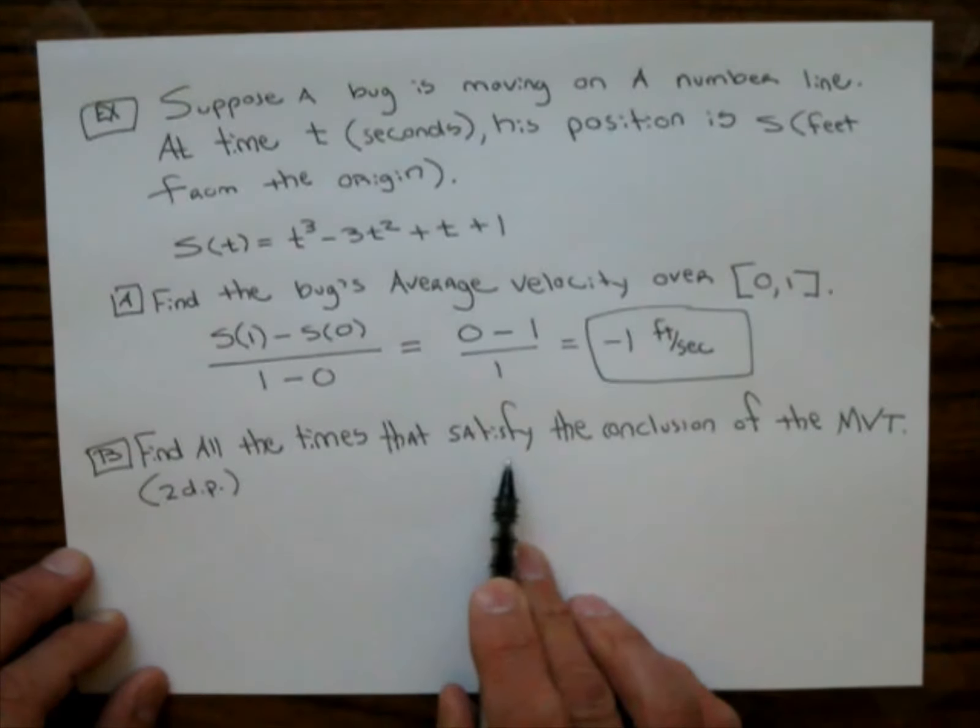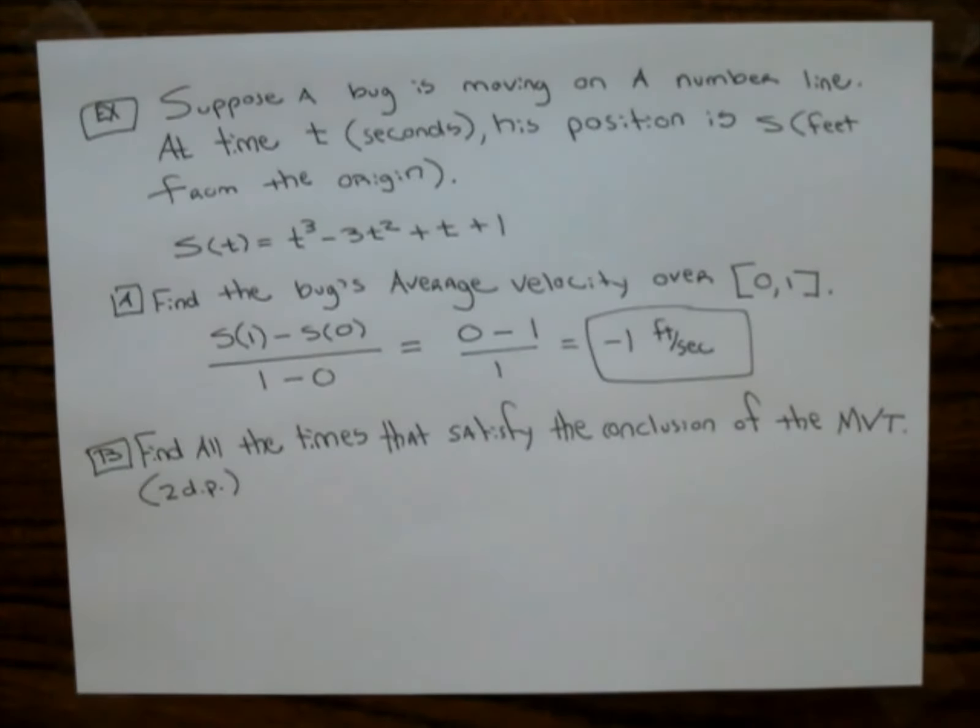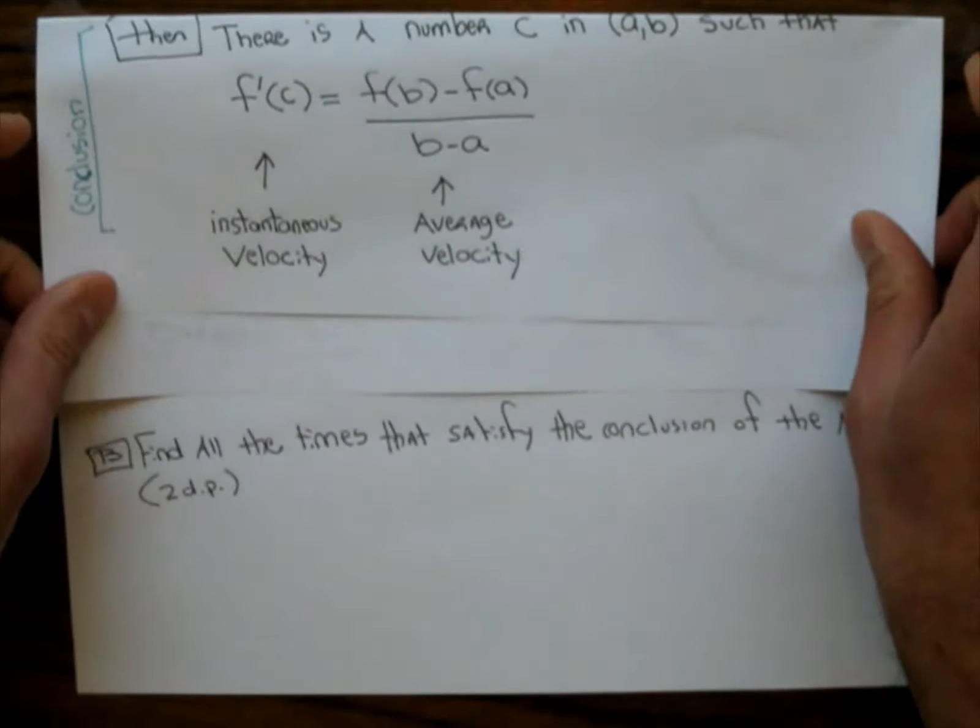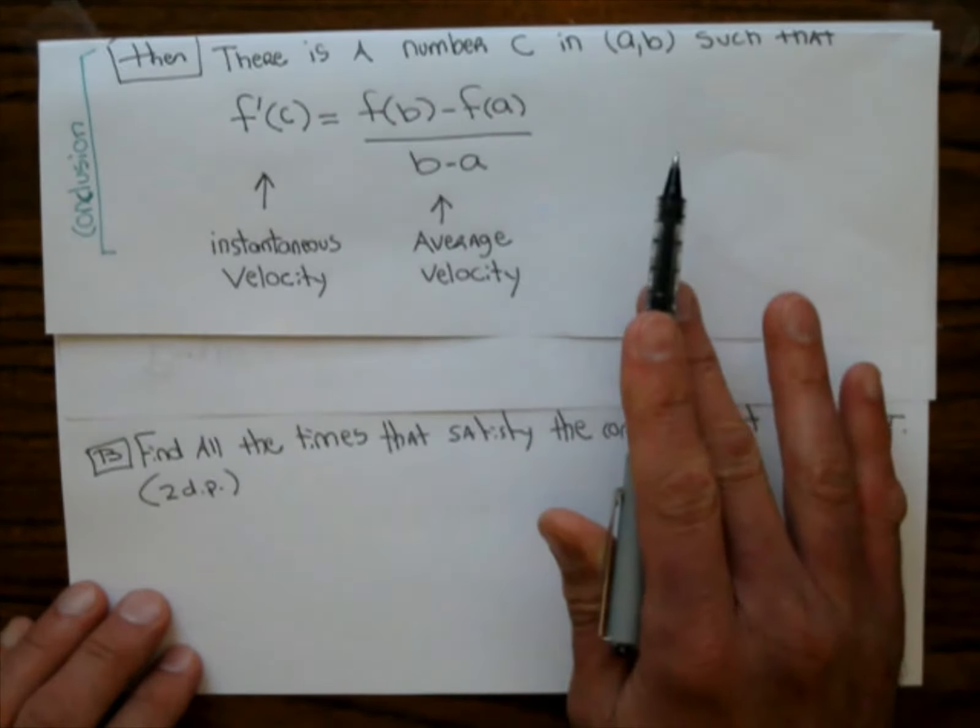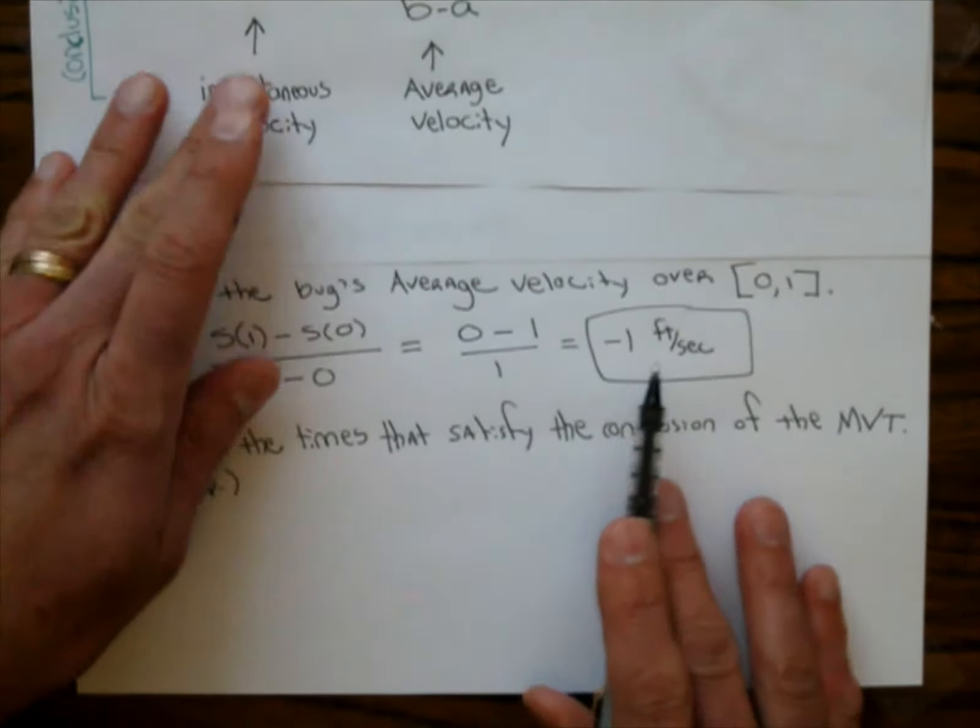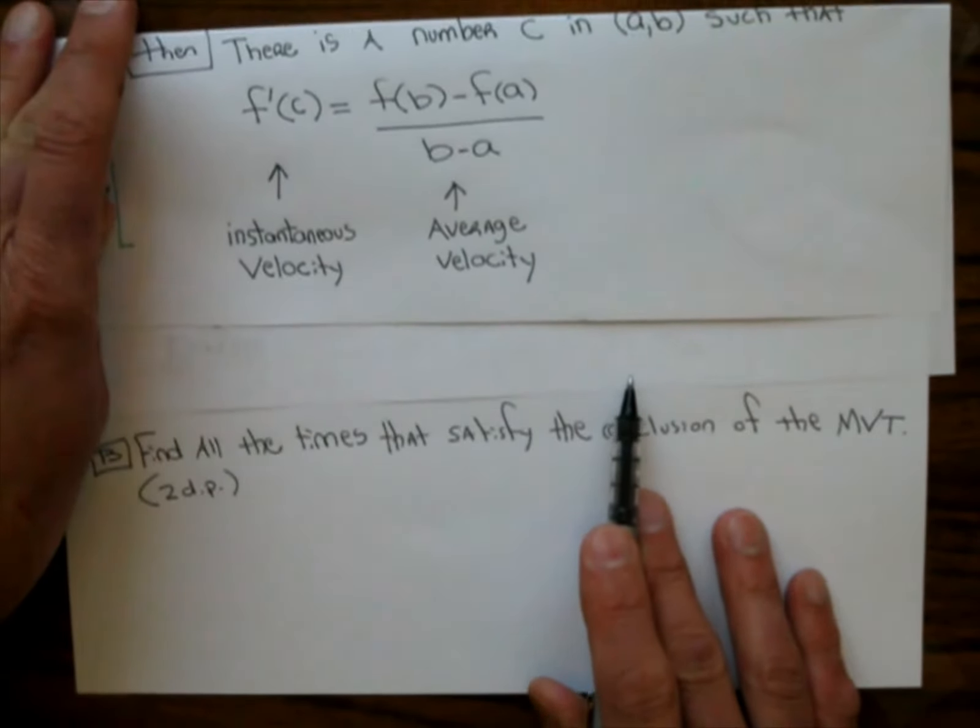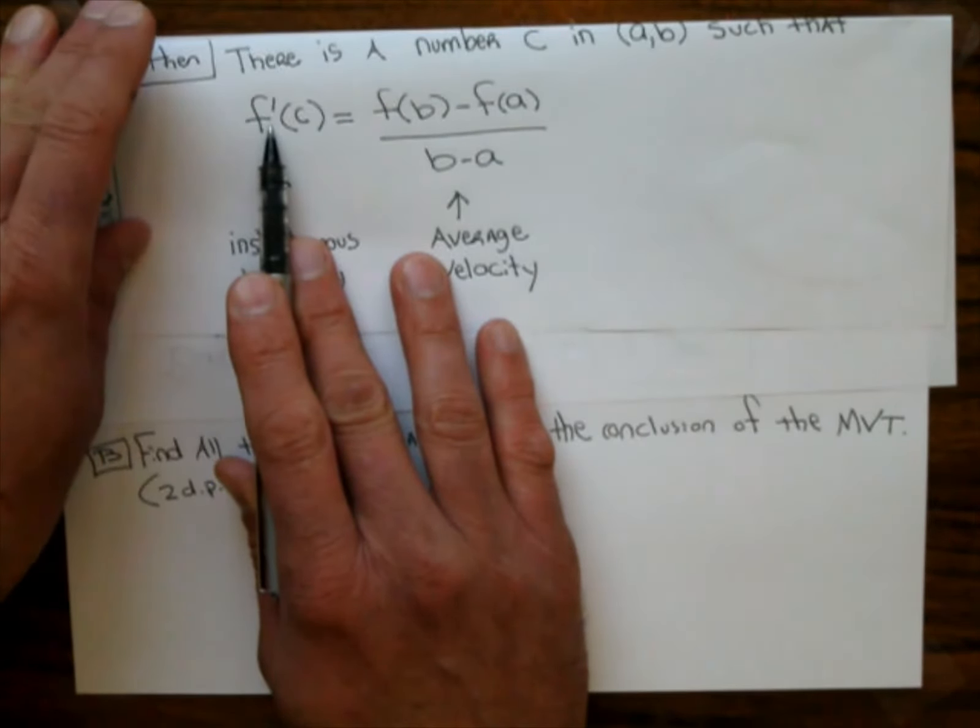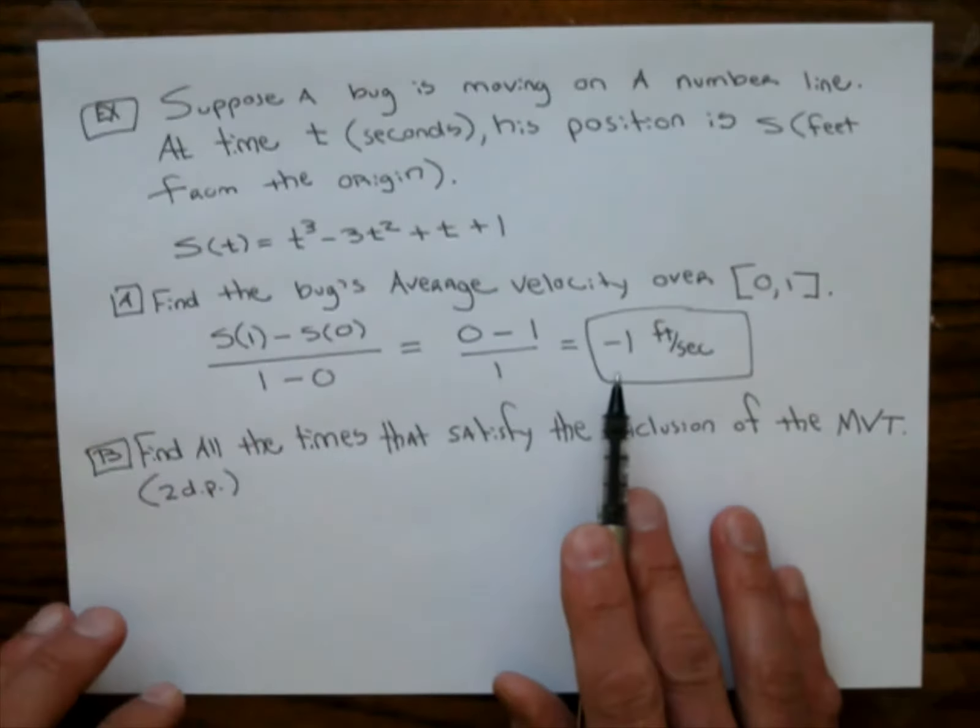Find all the times that satisfy the conclusion of the mean value theorem. Remember the mean value theorem. The conclusion is there is a number c such that f prime of c equals the average velocity. And we have just found the average velocity. So what we want to do on this problem is compute the derivative and see if we can find something that has instantaneous velocity of negative 1.